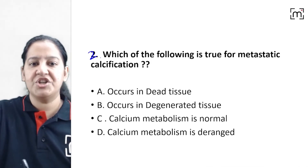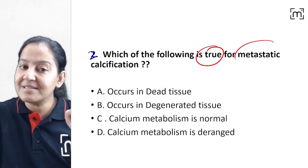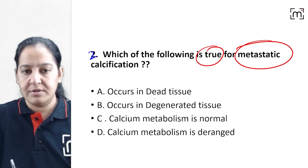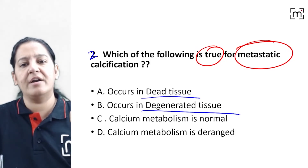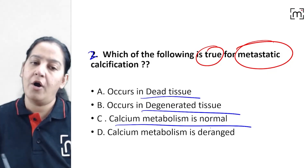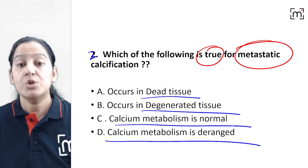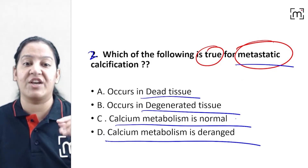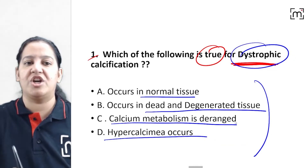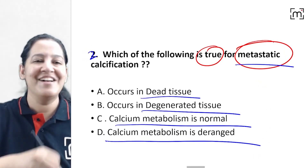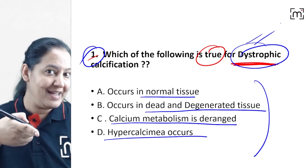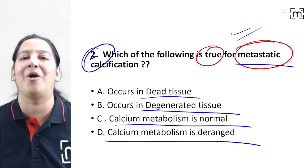Question number two: What is true about metastatic calcification? The four options are: A) it occurs in dead tissue, B) it occurs in degenerated tissue, C) calcium metabolism is normal, D) calcium metabolism is deranged. Write down your answers for both questions in the chat box — answer for question one about dystrophic calcification, and answer for question two about metastatic calcification.